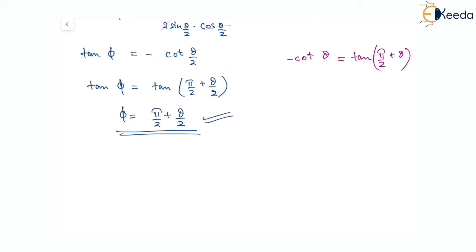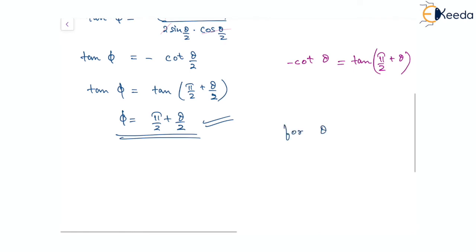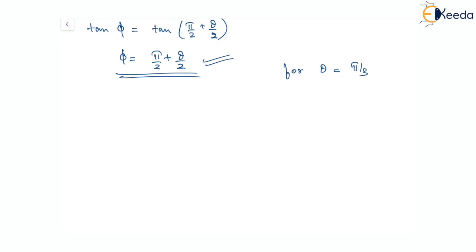We are given theta equal to pi by 3. Substituting, phi equals pi by 2 plus pi by 6. Taking LCM of 2 and 6, we get 3 pi plus pi over 6, that is 4 pi by 6, which simplifies to 2 pi by 3. So the angle between the tangent and the radius vector is 2 pi by 3.